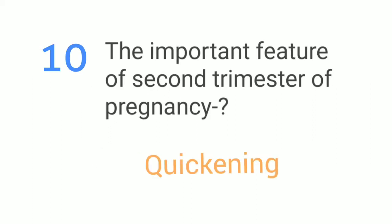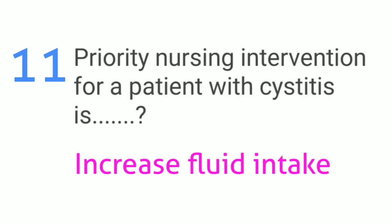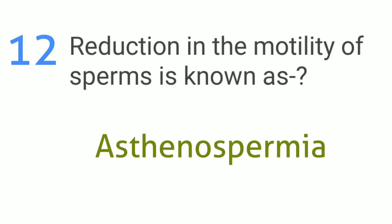The important feature of the second trimester of pregnancy is quickening. Priority nursing intervention for a patient with sickle cell disease is to increase fluid intake. Reduction in the motility of sperms is known as asthenospermia.